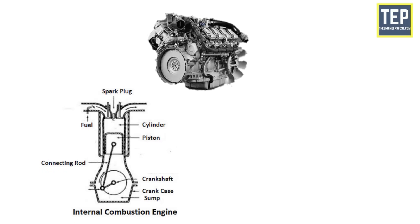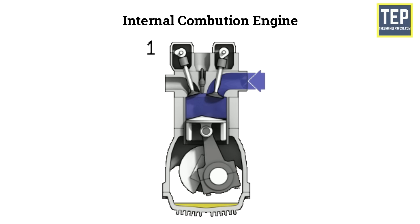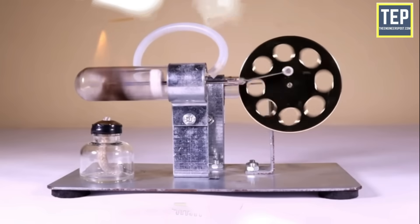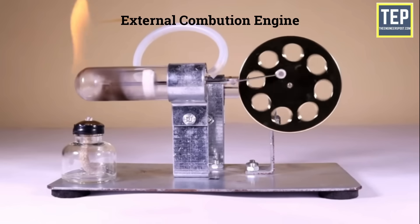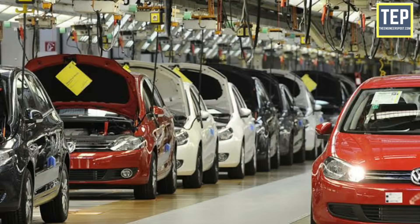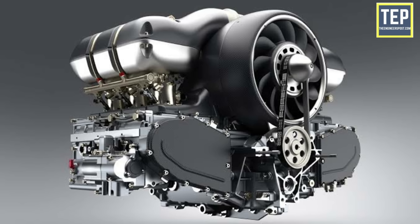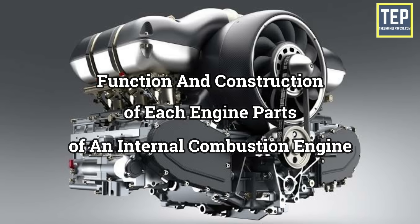The engine has two types: the internal combustion engine and the external combustion engine. The internal combustion engine burns its fuel inside the engine cylinder, while external combustion engines burn their fuel outside the cylinder. The engine is one of the most essential parts of the automobile industry — the heart of an automobile. In this video, we'll take a look at the function and construction of each engine part of an internal combustion engine.